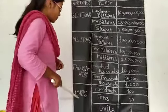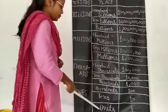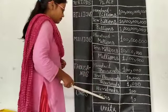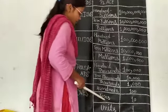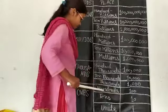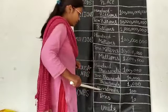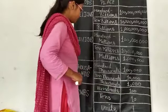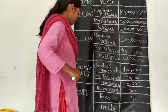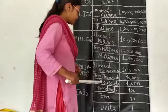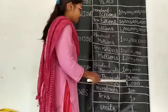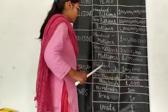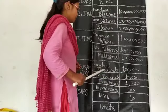First period, ones: units, tens, hundreds. Second period, thousands: thousands, ten thousands, hundred thousands.